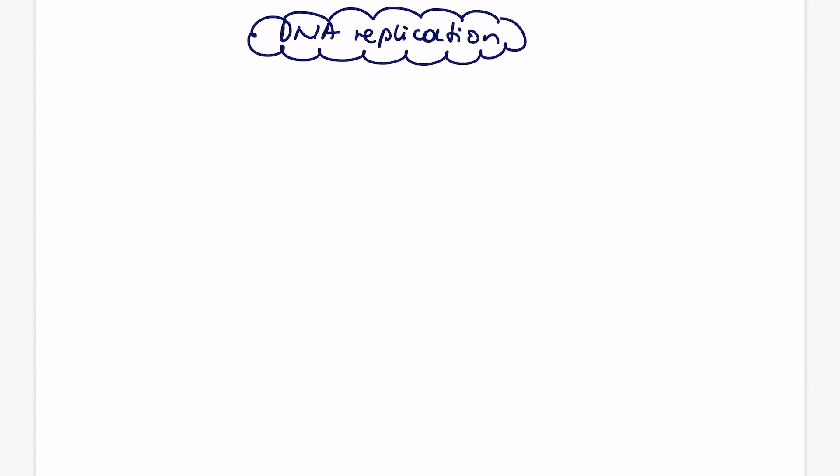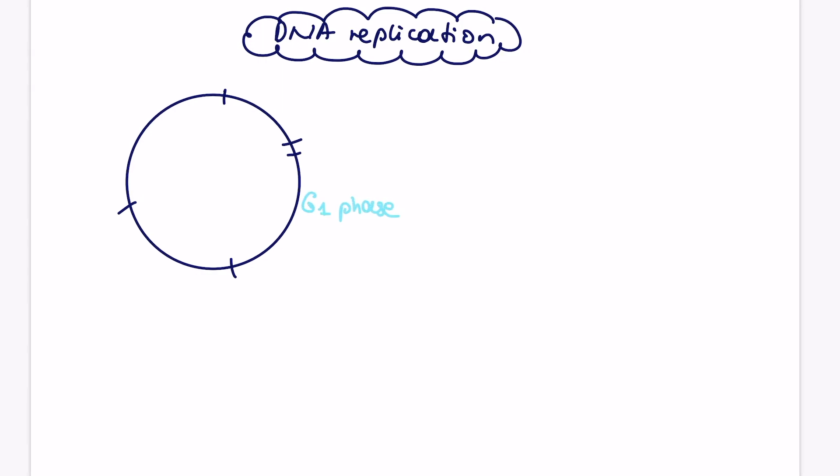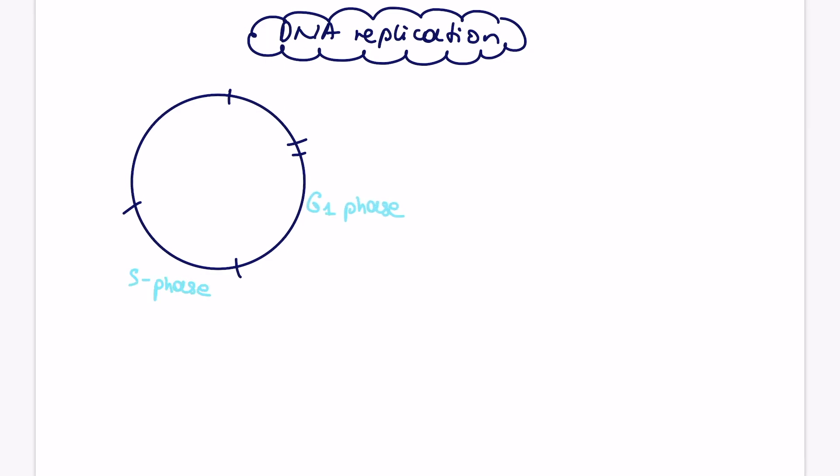So why do we bother learning about DNA replication as a process? It's essential to know this as a part of the cell cycle. Just as a quick overview of the cell cycle, we have several stages. We start with G1 phase, then we go into S phase, G2 phase, mitosis and then remember cytokinesis is a separate stage to mitosis which is commonly mixed around.